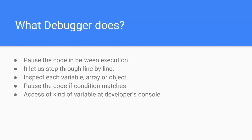Before proceeding further and debugging an actual program, I want to talk about the developer console. We can use it for different purposes — like accessing different variables, applying operations on those variables, and accessing the DOM (Document Object Model) to check what's happening in the browser.